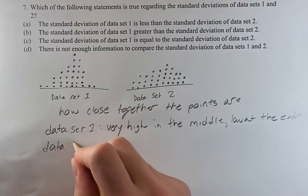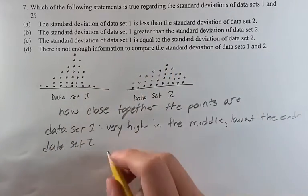Whereas dataset 2 is more spread out, it's a more gradual shift towards the middle.